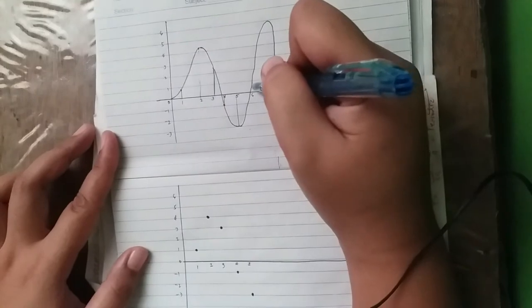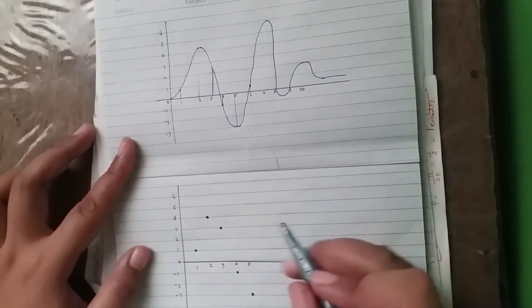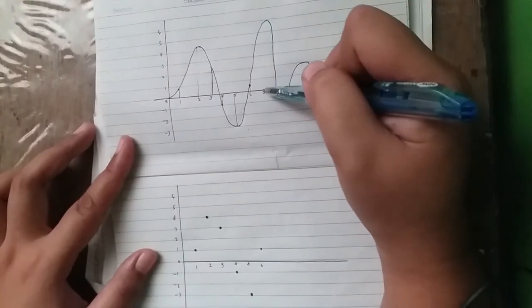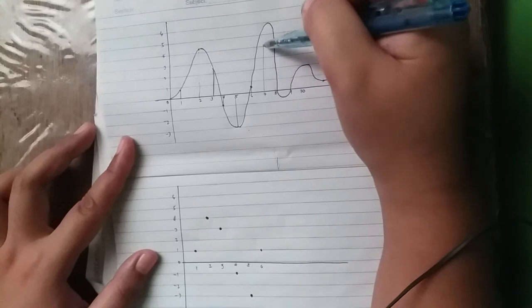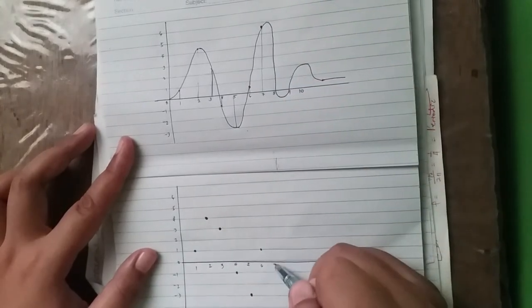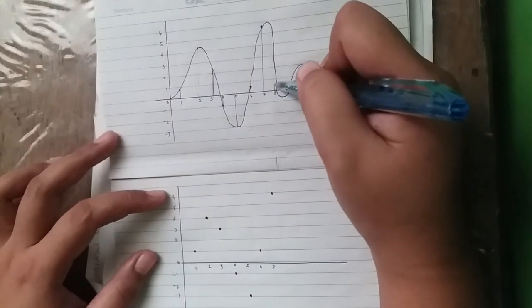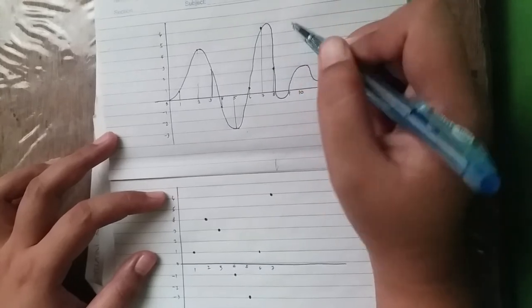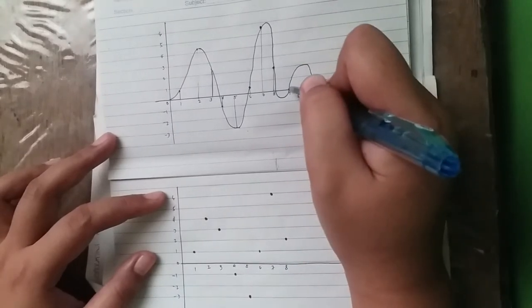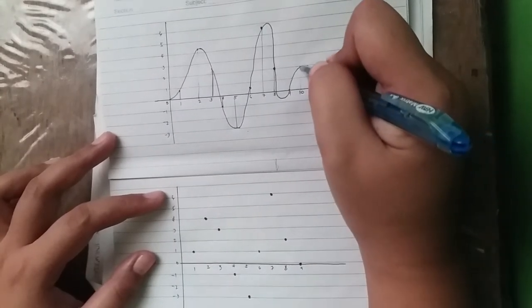5, negative 5, negative 3. 6, it is 1. 7, 6. 8, 2. 9 is 0, while 10, it's 2.